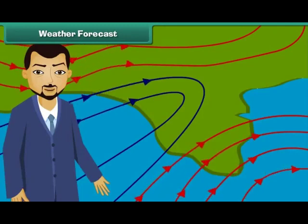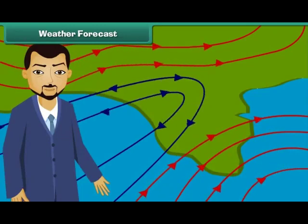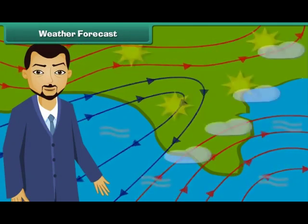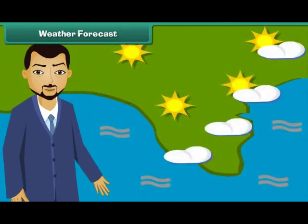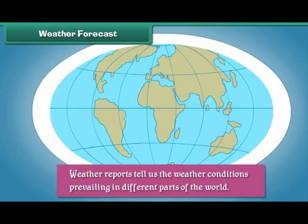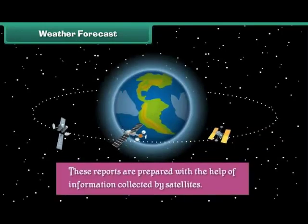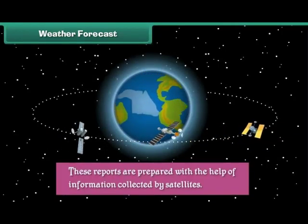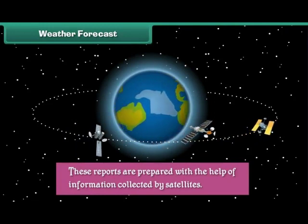Prediction of the future weather conditions of an area is called weather forecast. Weather forecast predicts the temperature, humidity and possibility of rainfalls in a particular area in the near future. Weather reports tell us the weather conditions prevailing in different parts of the world. These reports are prepared with the help of information collected by satellites.